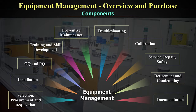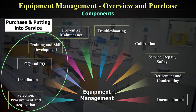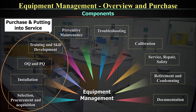These 10 components can be discussed as two clusters. The first cluster covers purchase and putting into service, which includes: selection, procurement and acquisition; installation qualification; operational qualification; performance qualification; and training and skill development. These components are the primary and initial parts of an equipment management program — how you acquire equipment, install it, assure its performance, and train staff to use it optimally.